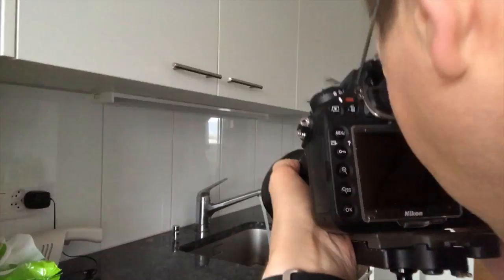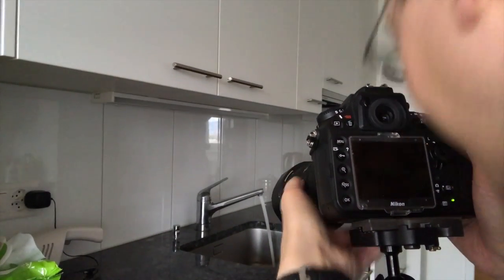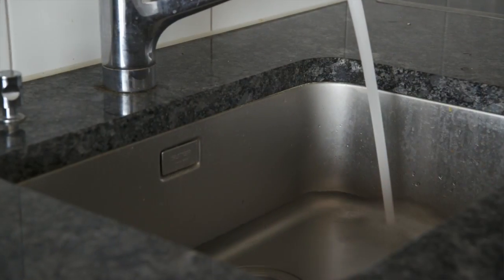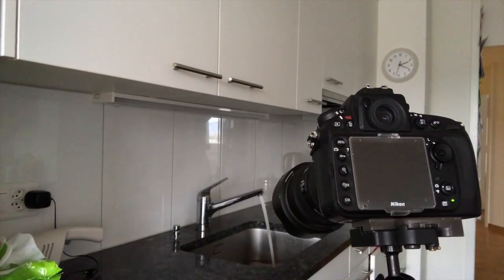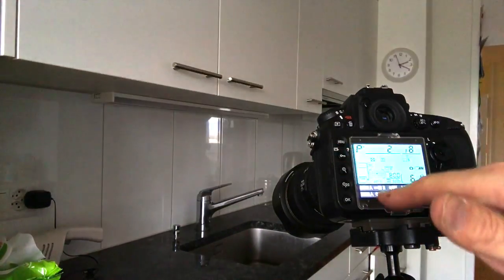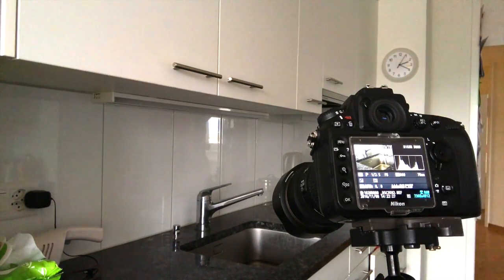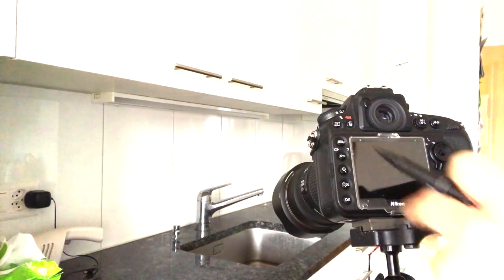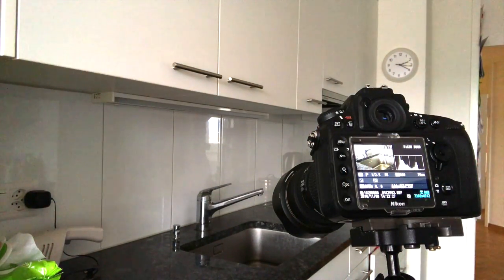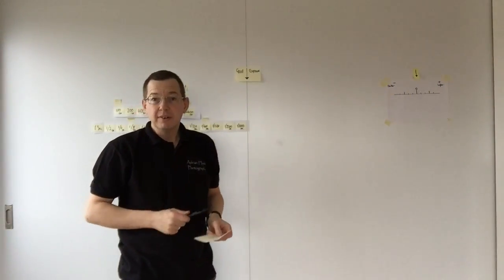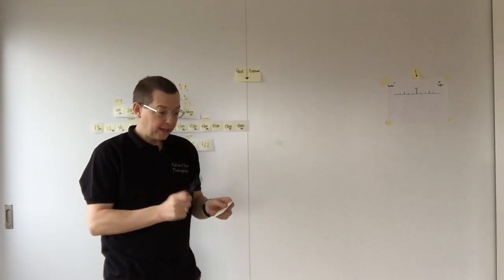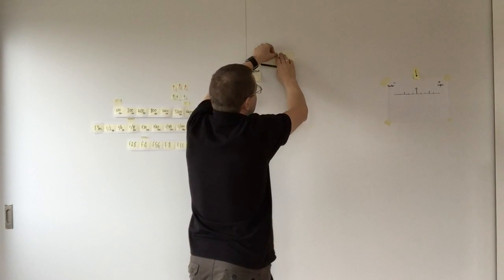That first one was blurred so let's do it again. Now we have our photo. Looking at the information, it's program mode: two and a half seconds... actually it's half a second, F8 and 800 ISO. So we now have our good exposure: half a second, F8 and 800 ISO.